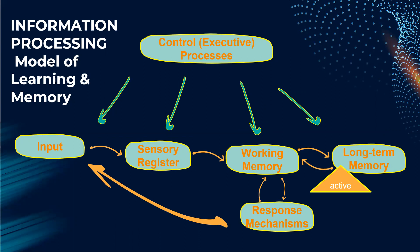The sensory register then transfers the information to short-term memory, also called working memory. The working memory only corresponds roughly to awareness, or what one is conscious of at a given moment. It is limited in capacity and duration — it can only hold seven plus or minus two units of information. This is the reason why most cell phone numbers are only seven digits, and also car plate numbers, because that is the maximum number of digits our brain can easily memorize.